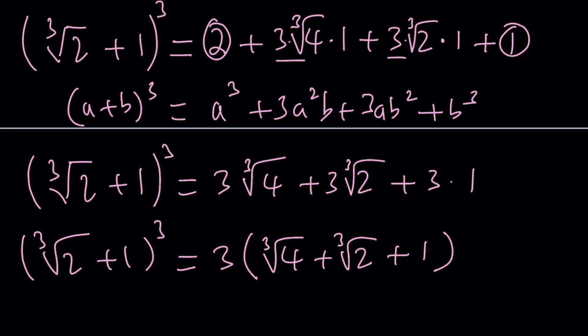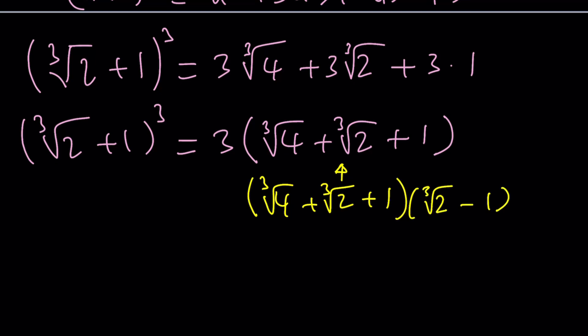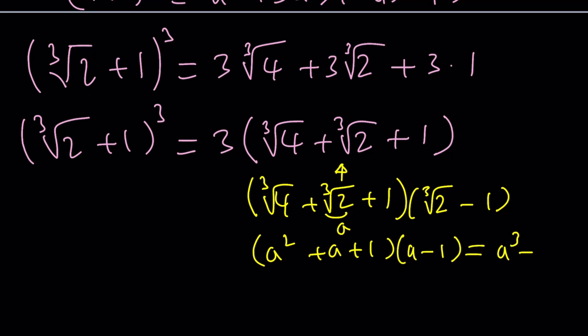If you're familiar with sum of two cubes and difference of two cubes, you should recognize what's coming. We're going to multiply both sides by the conjugate of the expression on the right-hand side. If you multiply (∛4 + ∛2 + 1) by (∛2 − 1) and distribute, you get two minus one, which is one. Calling ∛2 = a, this is a² + a + 1 multiplied by a − 1, which equals a³ − 1 = 2 − 1 = 1. So multiply both sides by (∛2 − 1) and the right-hand side equals 3 times 1 = 3.